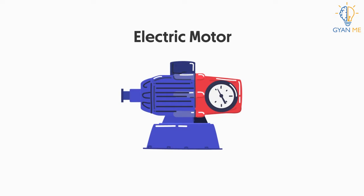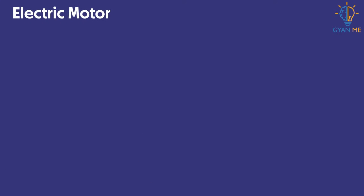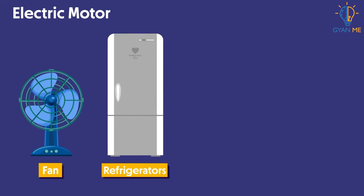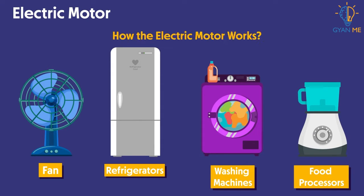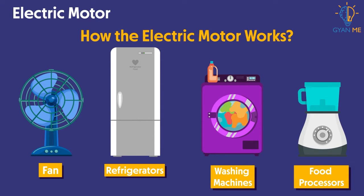The electric motor finds many practical applications in our daily life. It is used in appliances such as fans, refrigerators, washing machines, and food processors. So let us explore how the electric motor works.